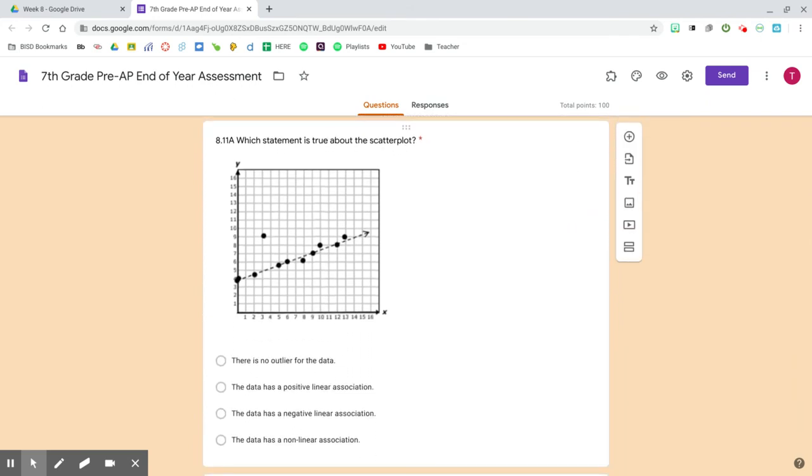Question 4. Which statement is true about the scatterplot? There is no outlier for the data. The data has a positive linear association. The data has a negative linear association. The data has a nonlinear association.